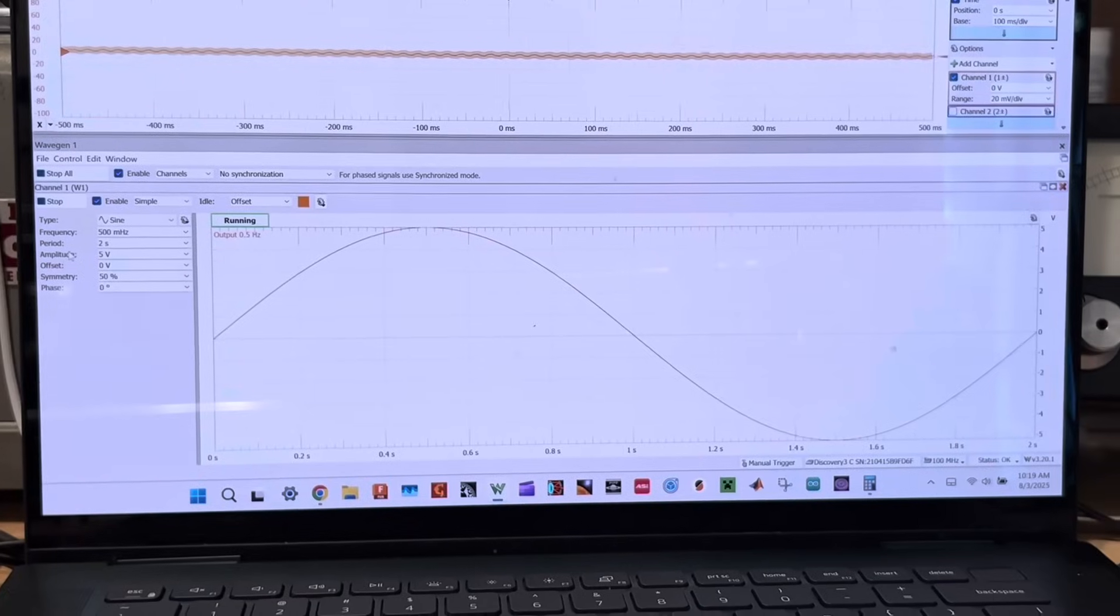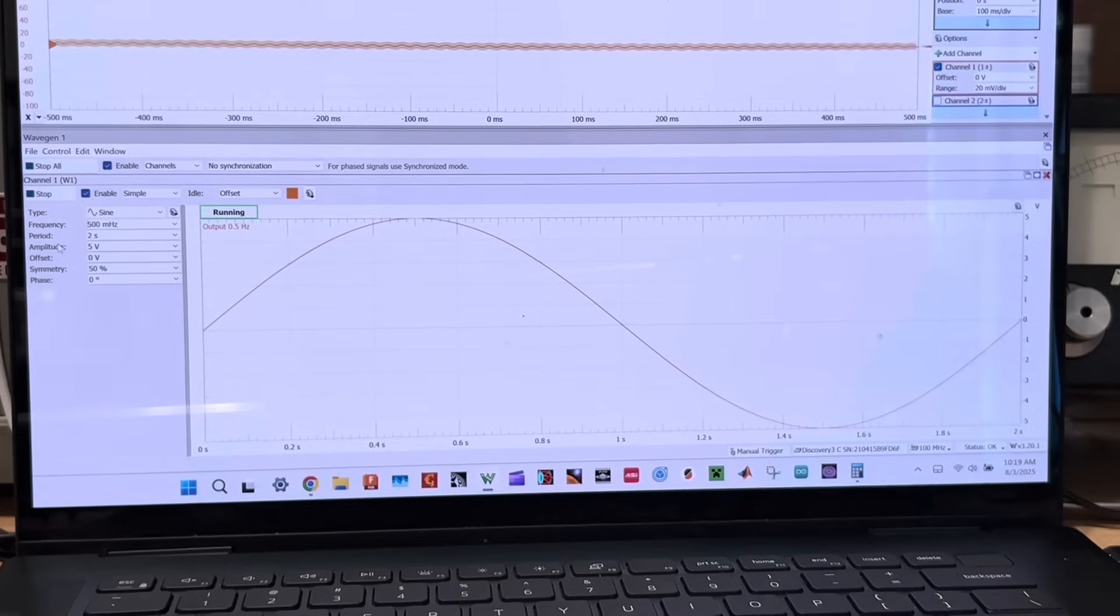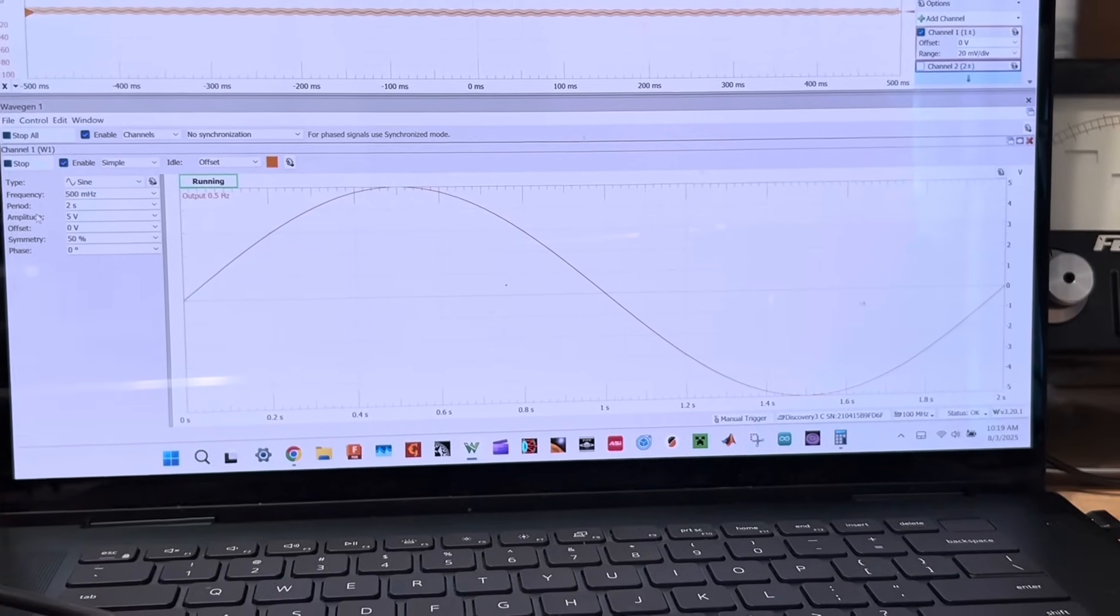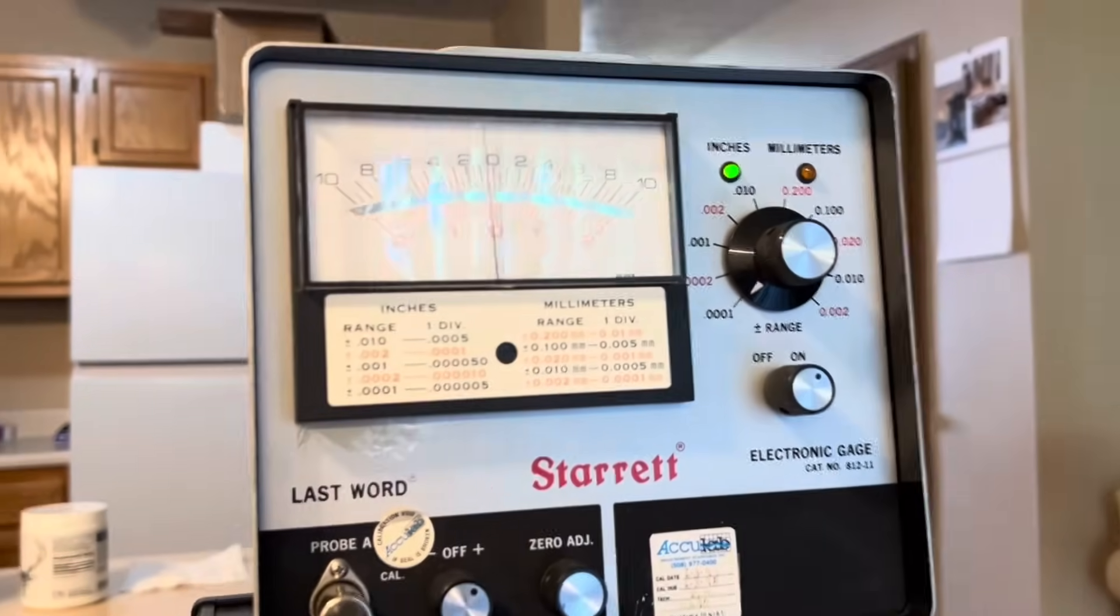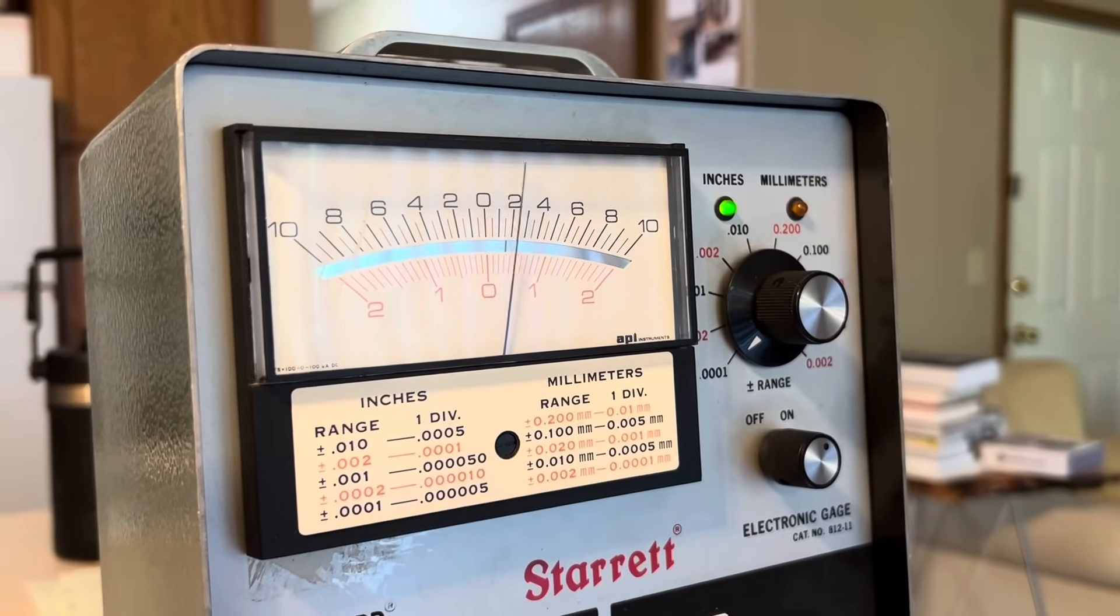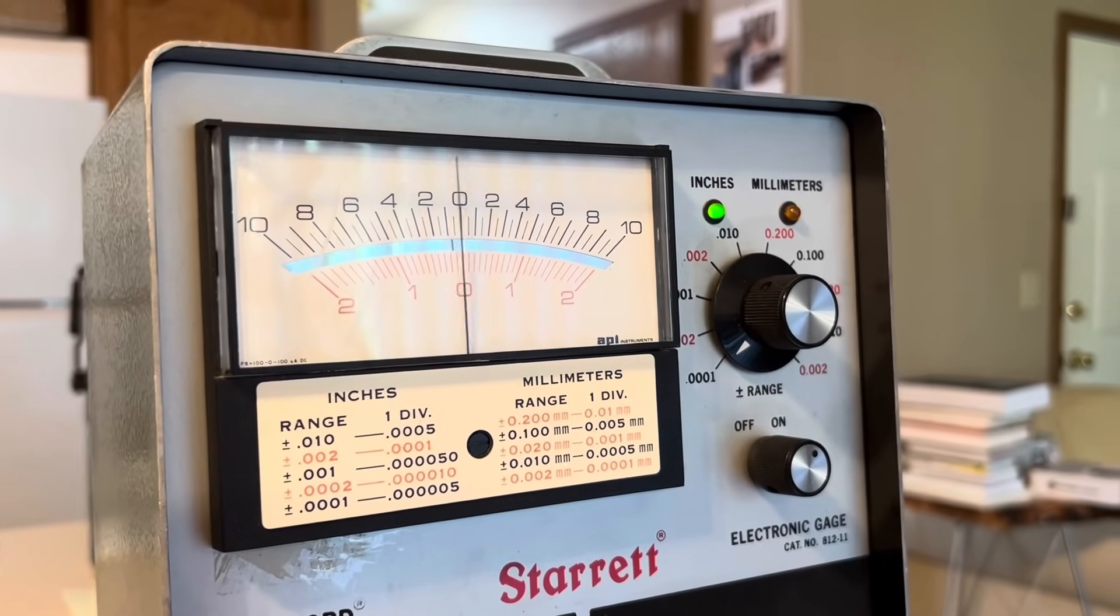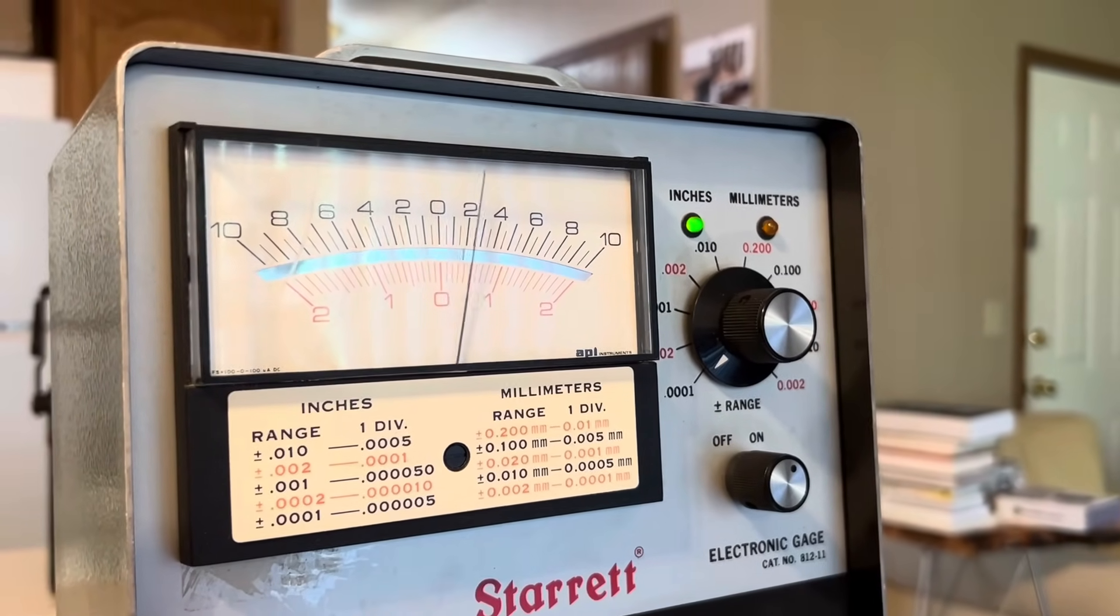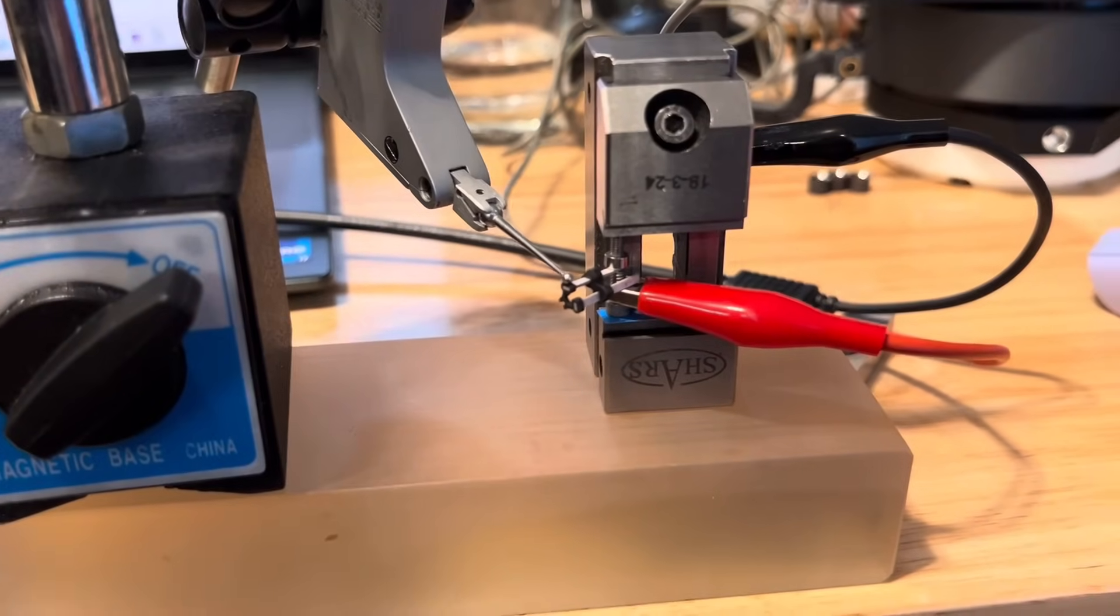So I'm driving that currently with a sine wave maxing out the amplitude of this analog discovery 3 plus or minus 5 volts. 10 volts peak to peak. And looking at the readout on the indicator here. So we're on the finest scale. And we're getting pretty much plus or minus 20 millionths, just over 20 millionths of an inch or so. Or just over a micron of total displacement for a 10 volt input signal. So pretty respectable.